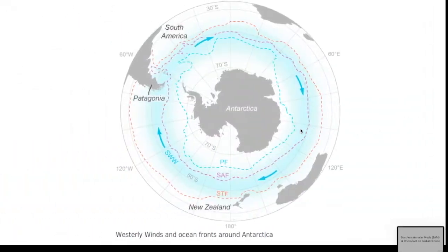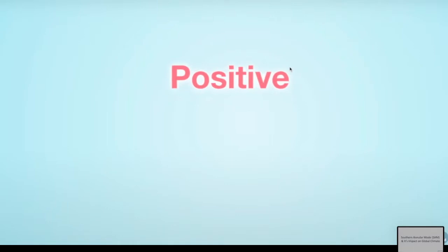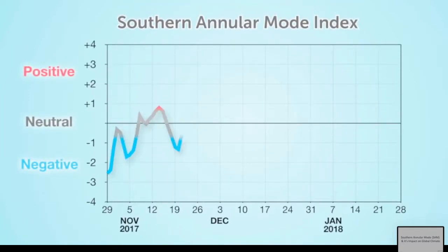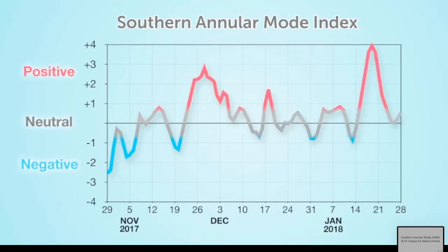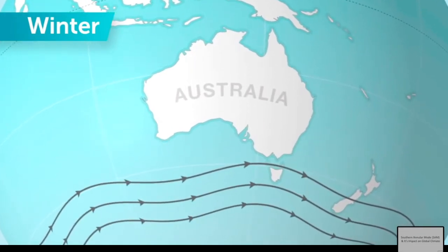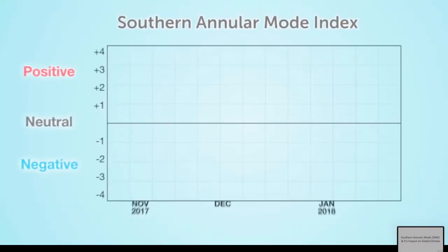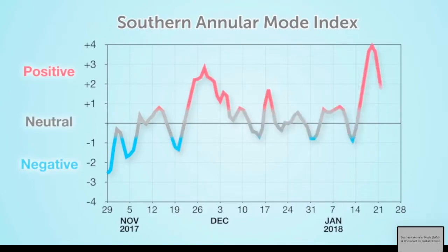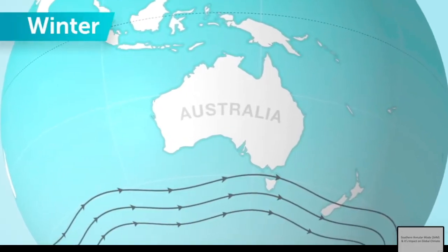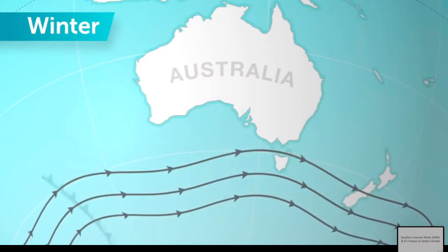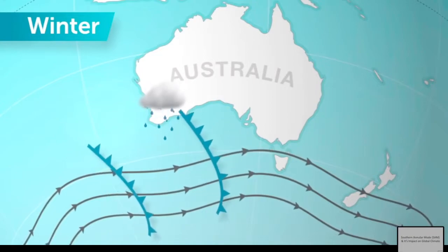There are three phases of SAM: positive, neutral, and negative. Neutral is just the mean of positive and negative. Here we have a comparison between positive SAM and negative SAM — if you remember positive SAM, the negative SAM is just the reverse. During winter in the southern hemisphere, the westerly wind moves in a certain direction. The cold air mass comes all the way from high latitudes toward low latitudes, creating frontal zones that lead to precipitation over Patagonia, New Zealand, and parts of southern South America.